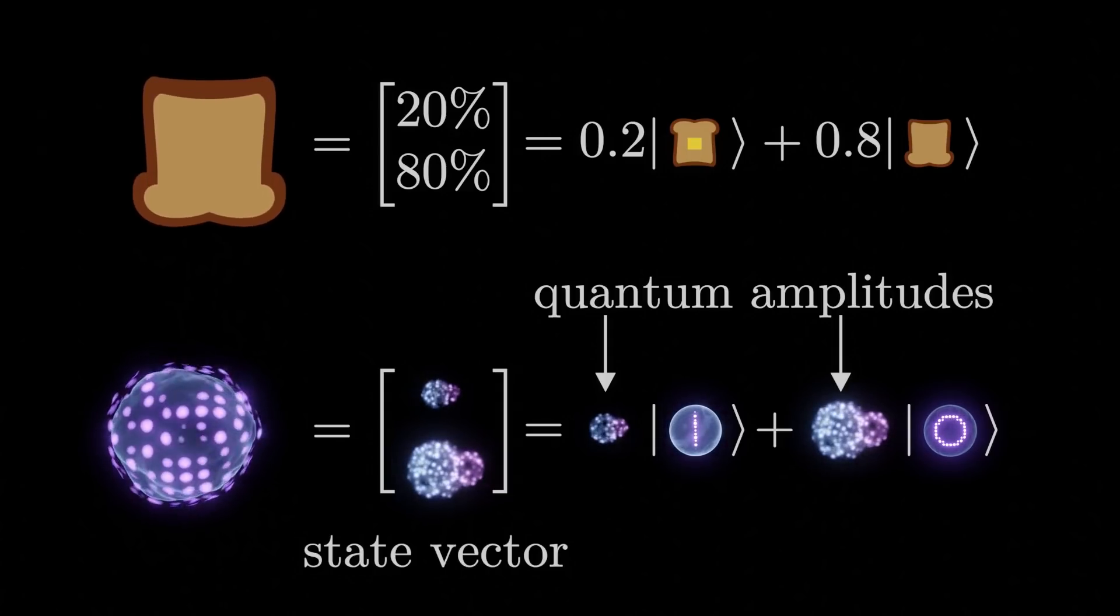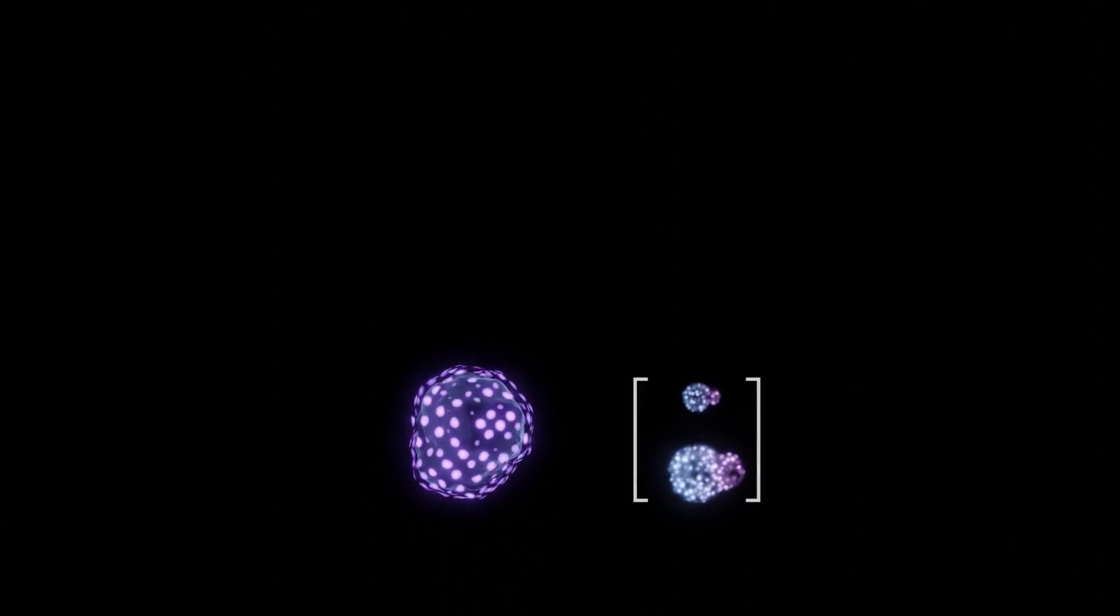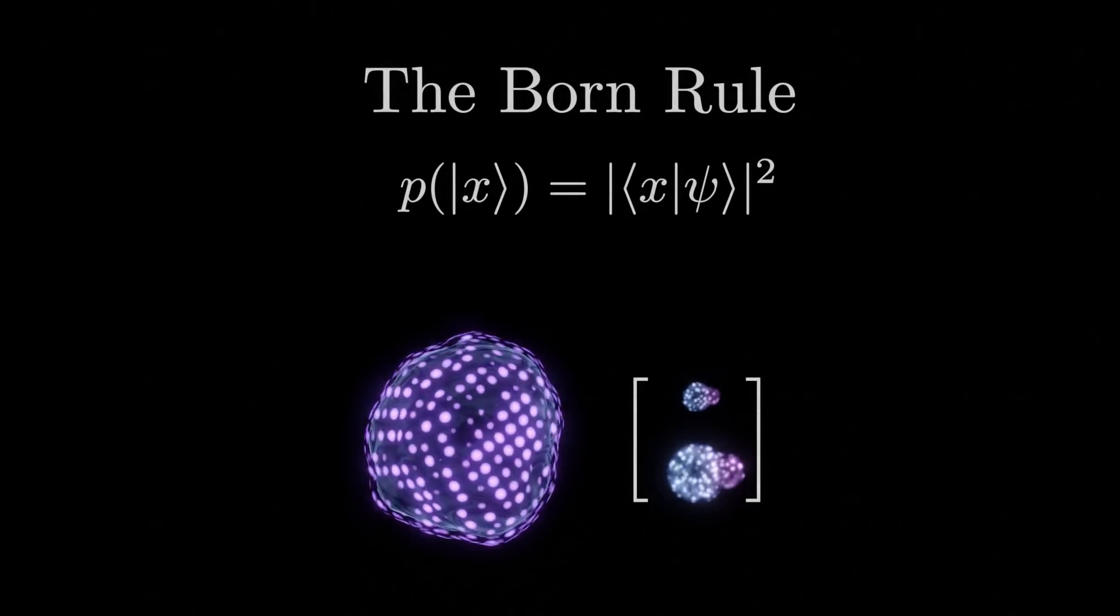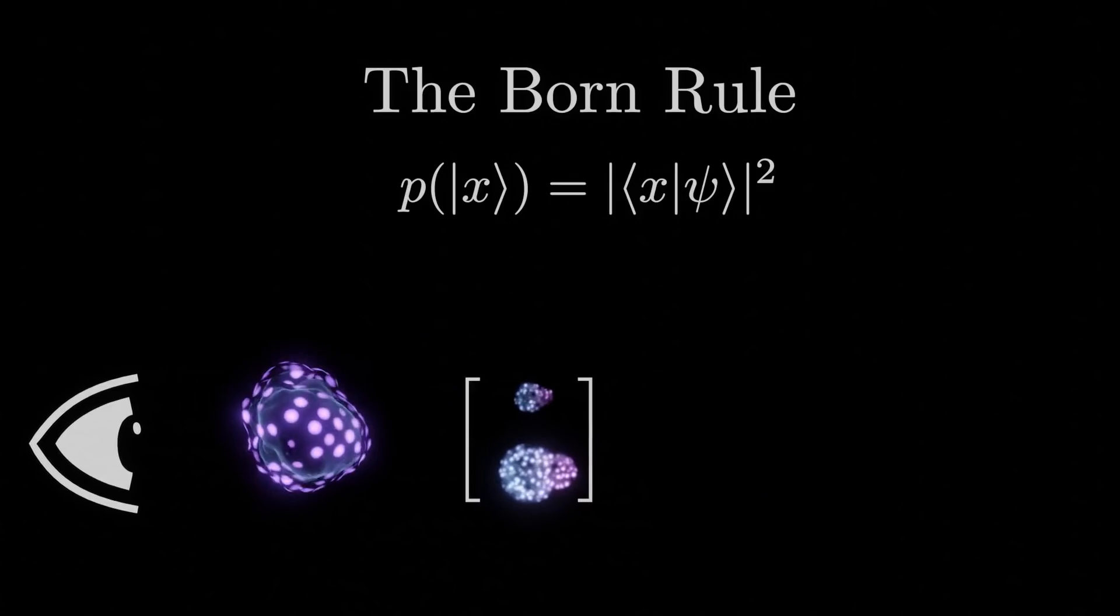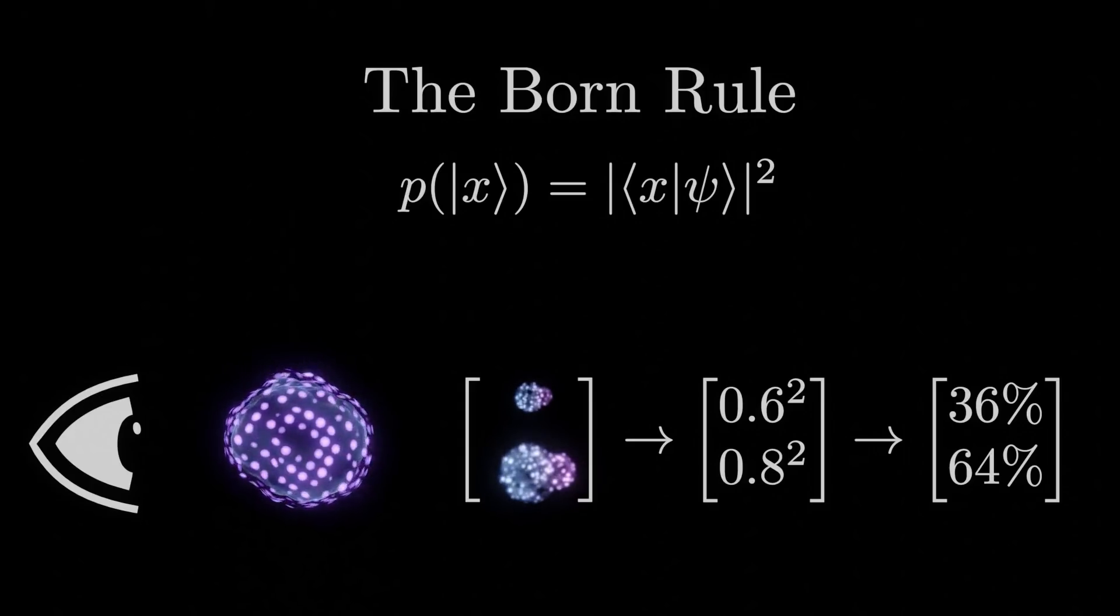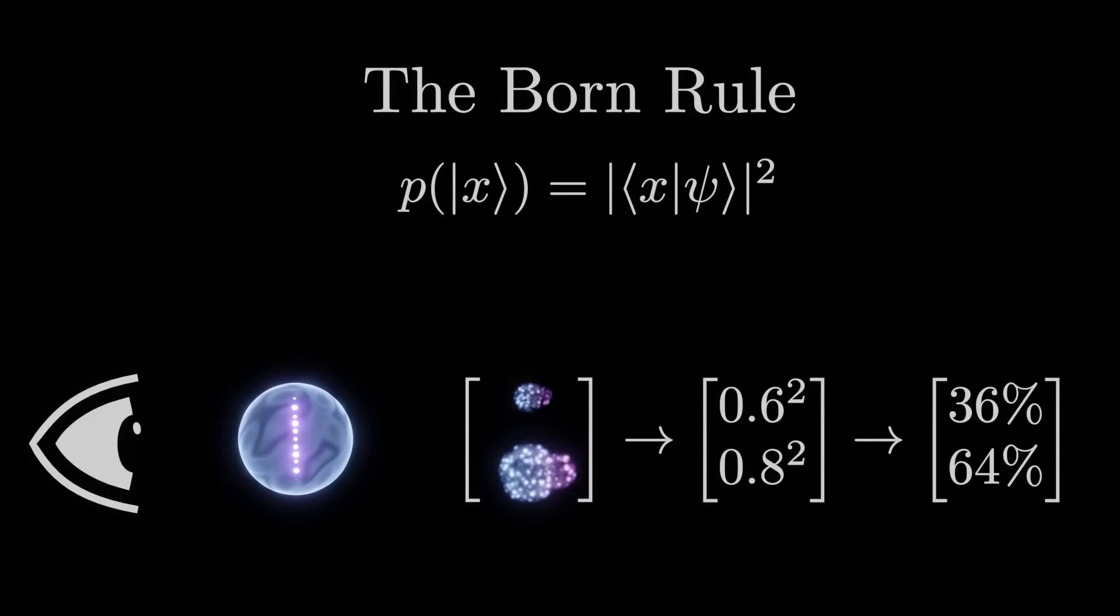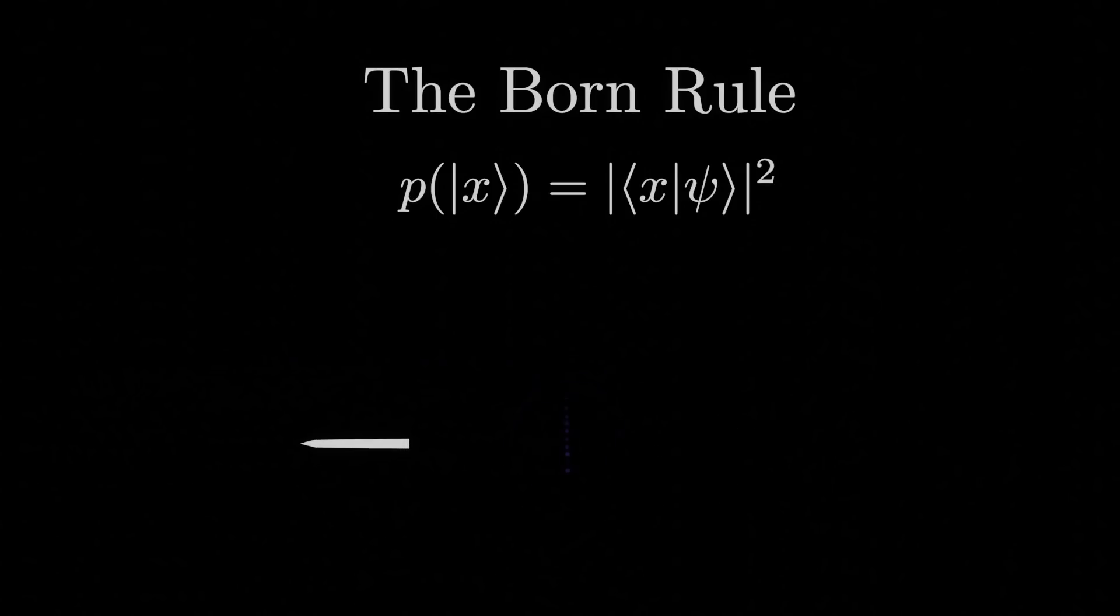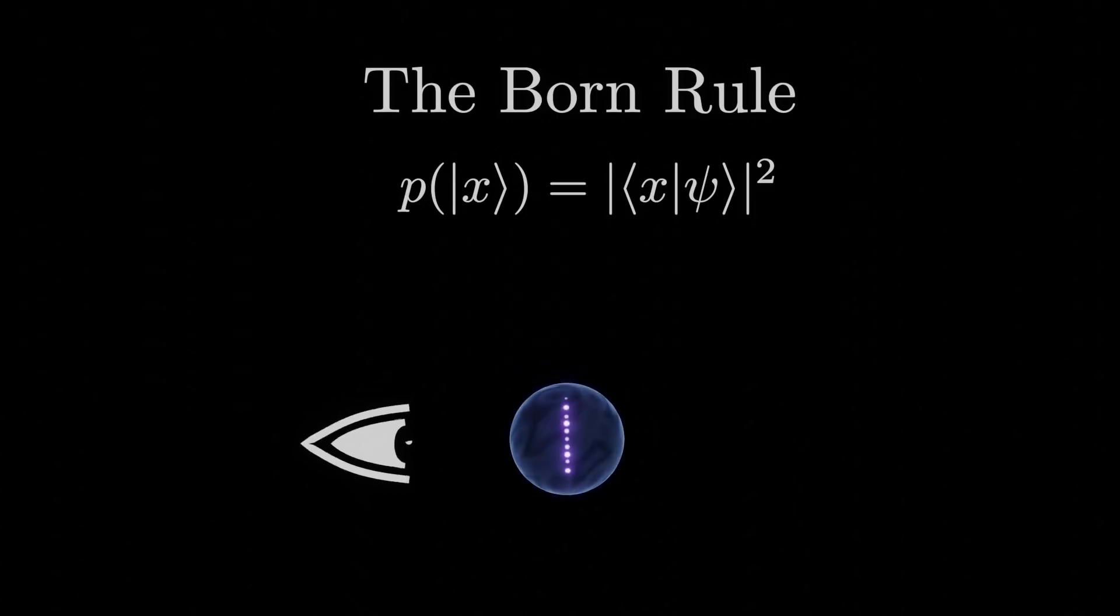This representation does not tell us how likely anything is by itself, though. We need some way of converting from quantum amplitudes to regular probabilities. This conversion is defined by the Born rule. What this formula says is that if we observe a quantum system, it will behave as if it has probabilities equal to the magnitudes of its quantum amplitudes squared. It is important to note here that what we are actually observing is the specific state that the superposition collapses to, which by itself tells us nothing about these probabilities. The only way to measure this is to repeatedly create the same superposition and observe it multiple times, noting down how often each state is observed.